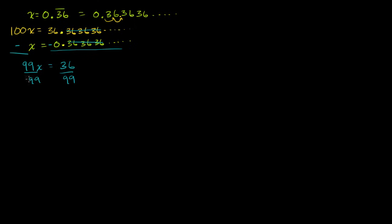And we are left with x is equal to 36 over 99. Both the numerator and the denominator are divisible by 9, so we can reduce this. Dividing the numerator by 9 gives 4, and the denominator by 9 gives 11. So 0.363636 repeating forever is equal to 4/11.